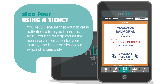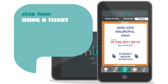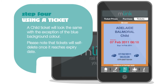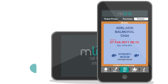You must ensure that your ticket is activated before you board the train. Your ticket displays all the necessary information for your journey, and has a border colour which changes daily. A child ticket will look the same, with the exception of the blue background colour. Please note that tickets will self-delete once it reaches expiry date.